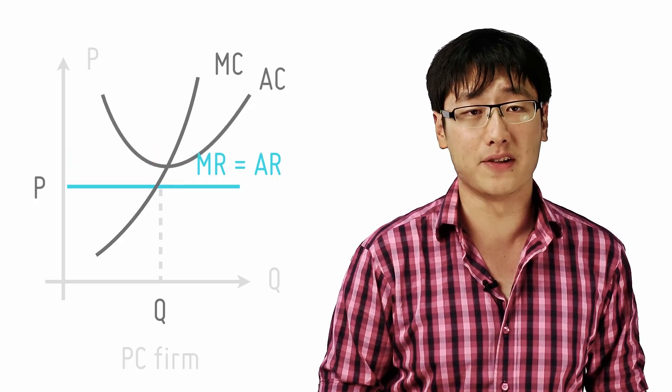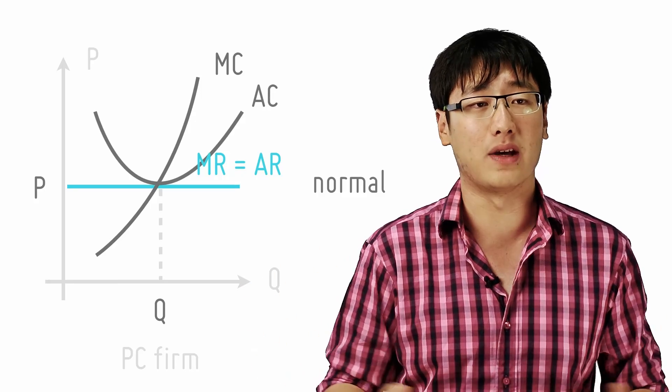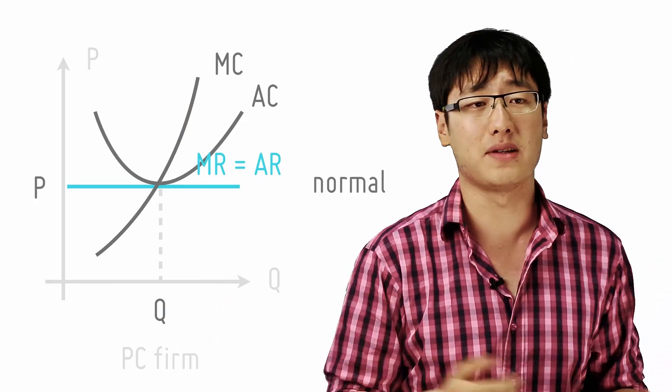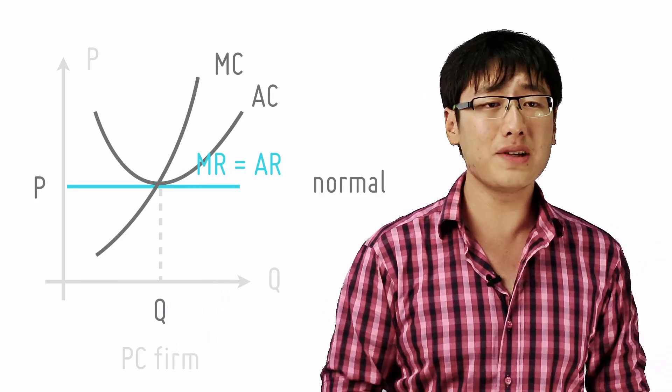Now of course the firm can make normal profits. That's when its AC equals the AR at a profit maximizing point. So there are three scenarios in the short run.